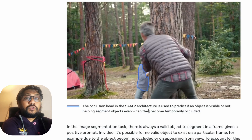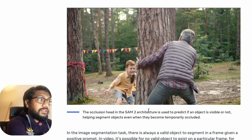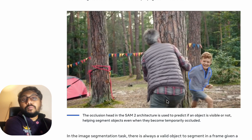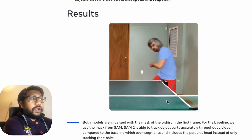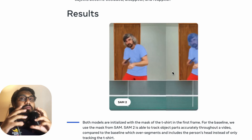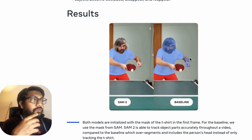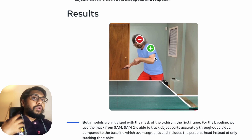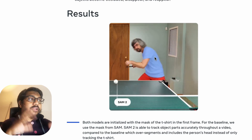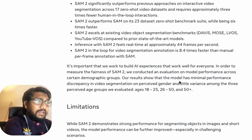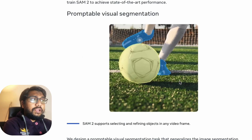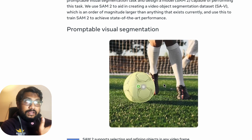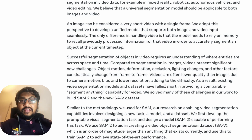SAM is good with images and with moving objects as well. For example, a boy continuously moving — SAM is pretty good at noticing and tracking even when the boy is moving. Meta also lets you track just a part of an object. For example, the baseline model tracks the whole human being, but you can indicate that you want to only track the shirt, not the head and everything, and it does a pretty good job of that. Similarly, with a football, you can specify that you don't want to track the shoe but want to track the ball, and it does a pretty good job. So overall, this is an excellent announcement.